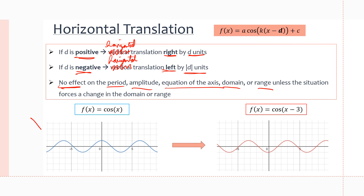If we start again with our cosine graph and apply a transformation where d equals three — remember, this is positive three in the base formula x minus d, so d is positive and we shift right. We go from x equals zero to x equals three, from negative three to zero, from three to six, and the graph basically just shifts to the right. If this was x plus three, we would shift left three units.